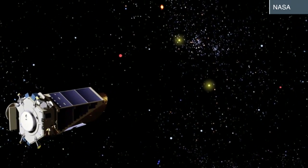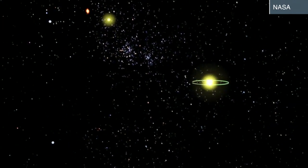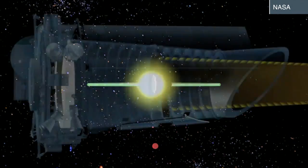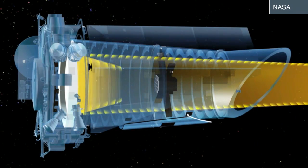Kepler uses four wheels to operate its gyroscope. Two of those critical parts are broken. The spacecraft is currently 51 million miles from Earth, orbiting the sun.